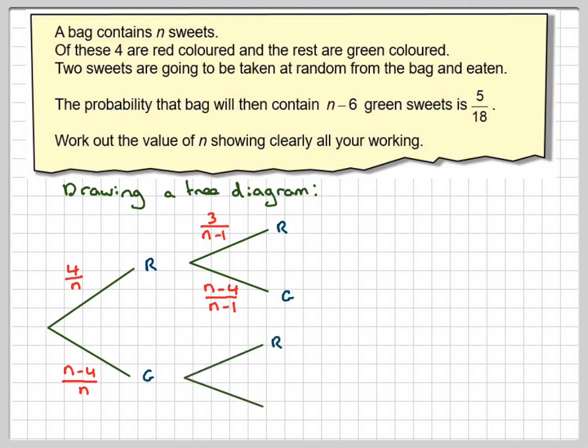Having got a green the first time round, we can get a red and a green the second time round. So this one will be 4, because there will still be 4 red ones, out of n minus 1. But this one will now be, because you've taken 1, there will now be 1 more less. So this will now become n minus 5 over n minus 1.